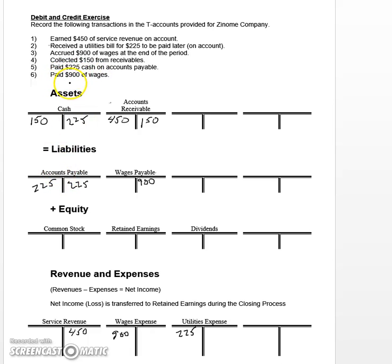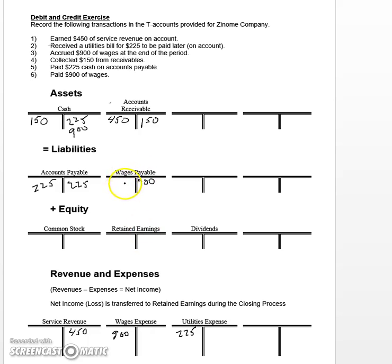The last entry says we paid $900 of wages. They're referring to the wages payable that we had originally set up as a liability. We're now paying this down, so let's start with cash and credit cash to show that reduction for the amount we're paying out. Then we come down to the wages payable account and debit this account to show that we're paying this payable off. Just like we paid the accounts payable off, we've now paid the wages payable off and we no longer owe any wages if you look at the net balance.